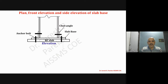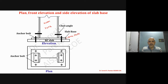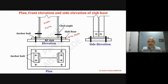We have the plan, front elevation, and side elevation. In the elevation you can see the ISMB beam, and we have cleat angles provided just to keep the beam straight — these are not designed for any load. We have the slab base or base plate, and then the RC slab. In the plan, make sure the lines are matched. For the side elevation, rotate 90 degrees — you can see that this distance equals that distance.